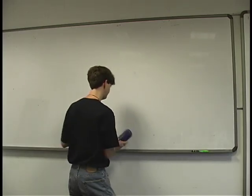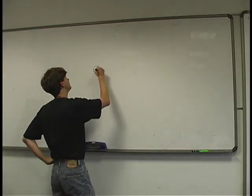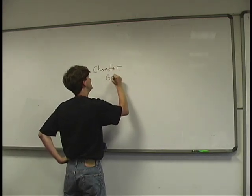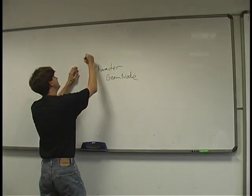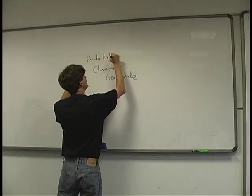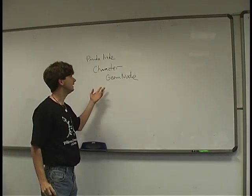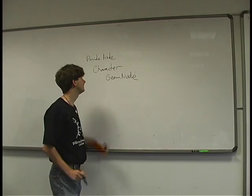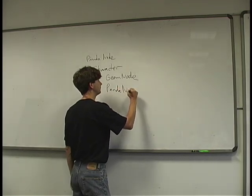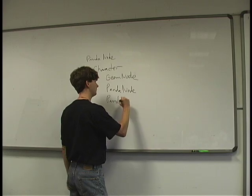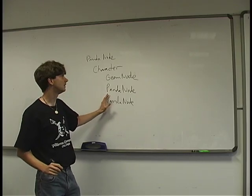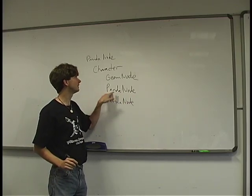Back to the high level. For the simplest kind of actor — a PandaNode at the top, with a Character and a GeomNode underneath — we might call exposeJoint() on the actor to get a joint we can manipulate or see. When that happens, it creates one or more PandaNodes under the Character. Each call to exposeJoint() creates a new node under the character — just a PandaNode.